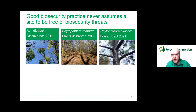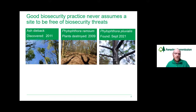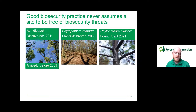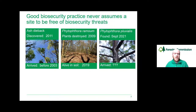Good biosecurity practice never assumes a site to be free from a biosecurity threat — referring to a pest, disease or invasive non-native species. For example, ash dieback was discovered in the UK in 2011, but there is evidence it actually arrived before 2003. A Phytophthora remorum site discovered in 2009 was subsequently sampled until 2019, where it was still found alive in the soil with no sporulating hosts present. And Phytophthora pluvialis was discovered in September 2021 — but when did it arrive? We just don't know. You can never assume a site you're working on or travelling between to be clean or free from biosecurity threats.